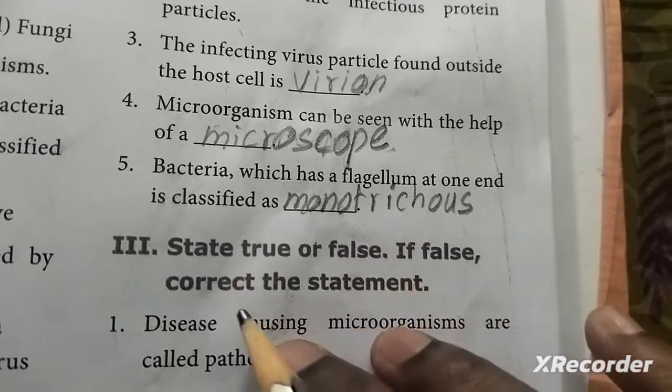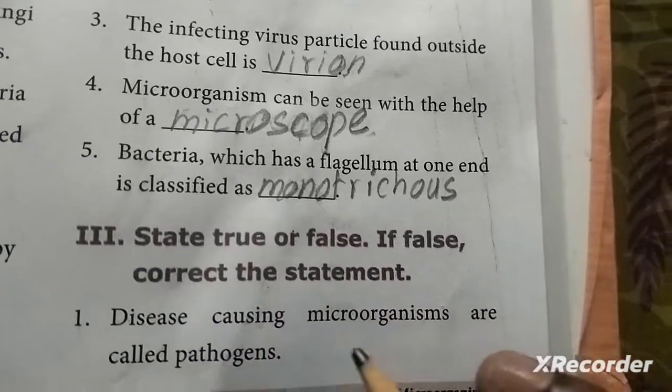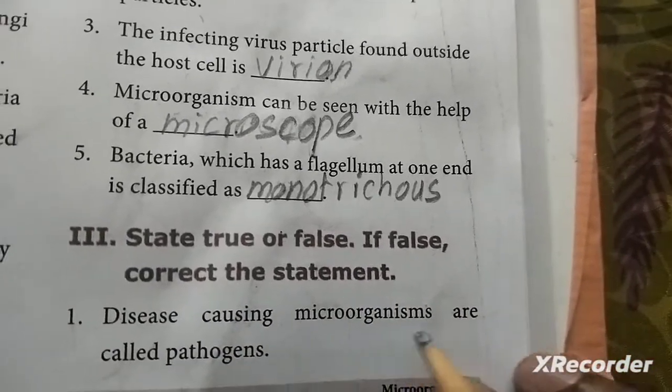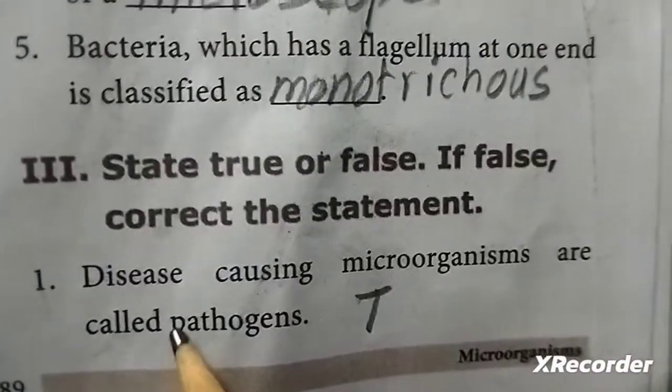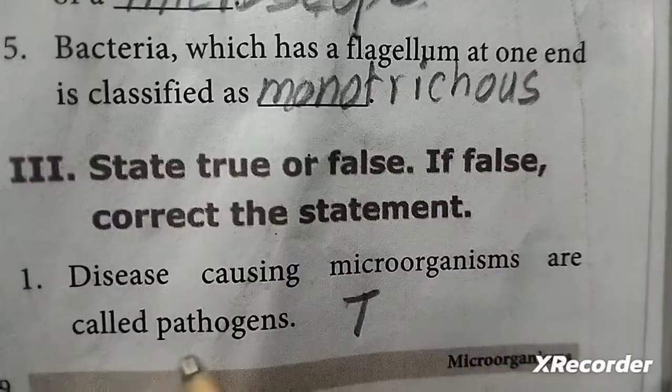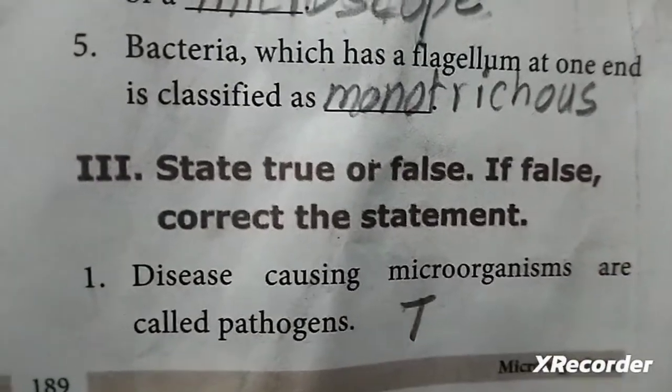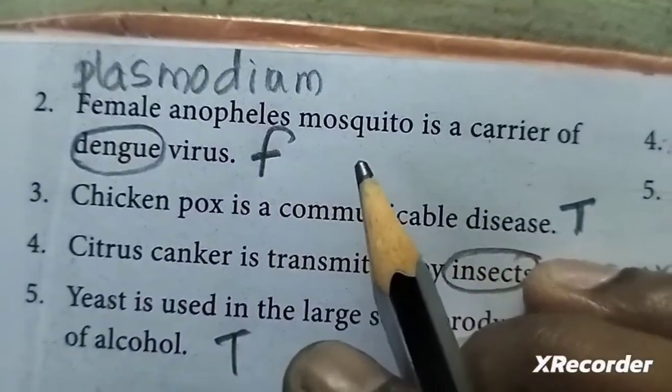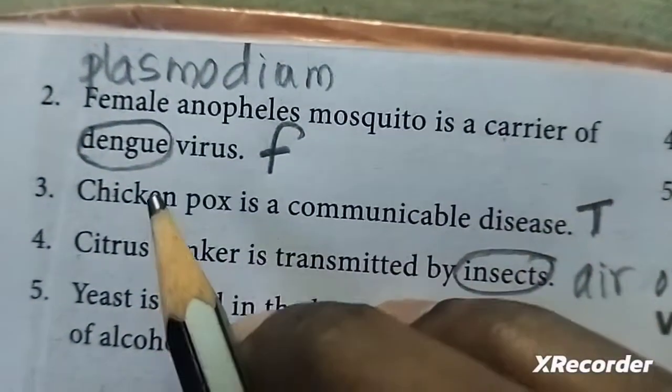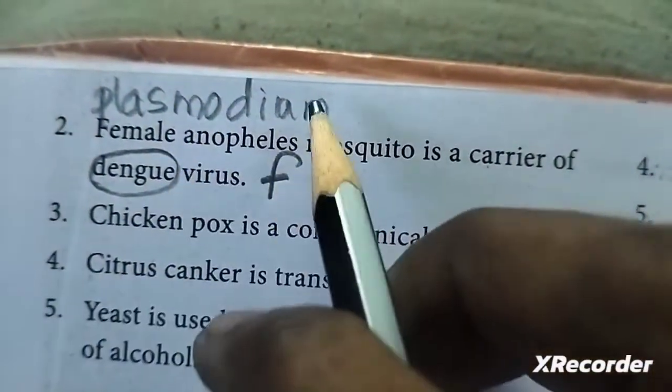Next is state true or false. If false, correct the statement. First one: disease causing microorganisms are called pathogens. Second: female anopheles mosquito is a carrier of dengue virus and plasmodium.